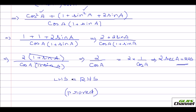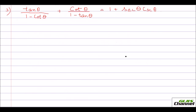Just use all your identities wherever necessary, stick to the rules, and keep moving slowly — you will definitely end up with the right hand side. Here is the third problem: tan theta over (1 minus cot theta) plus cot theta over (1 minus tan theta) equals 1 plus secant theta times cosecant theta. Let's start with the left hand side.